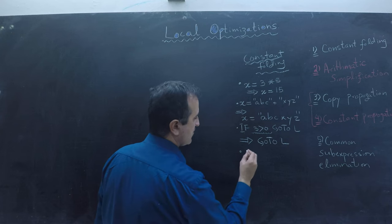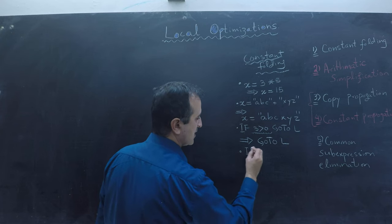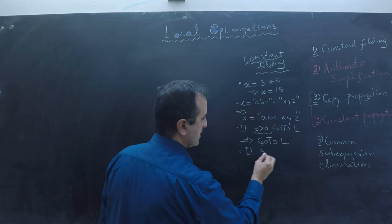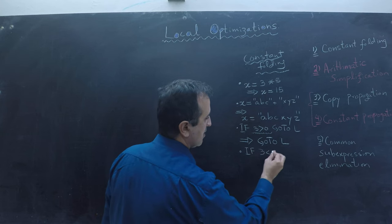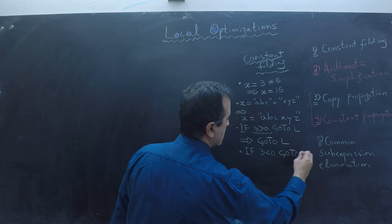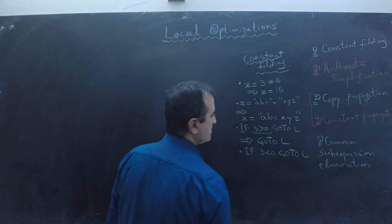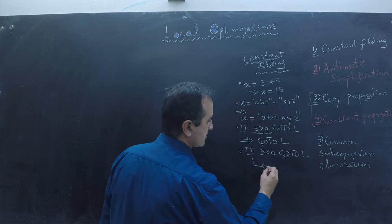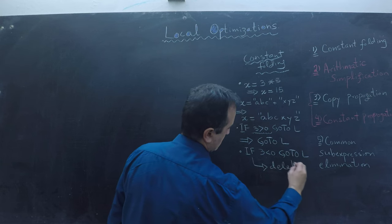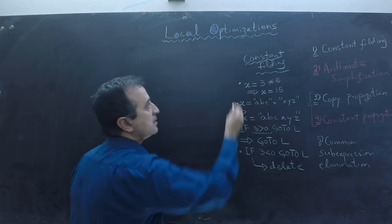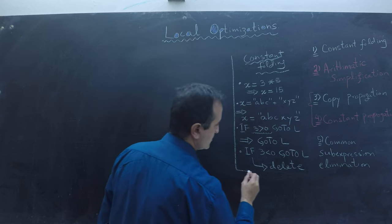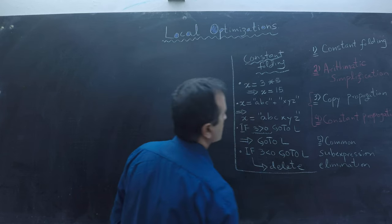Finally, if I have a conditional branch instruction where my condition is always false, then I can simply delete that instruction from my code. Those are some examples of constant folding.